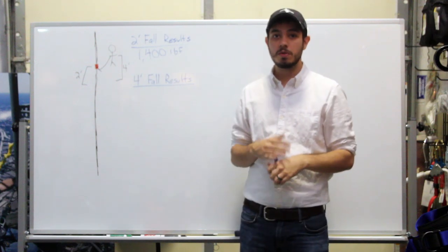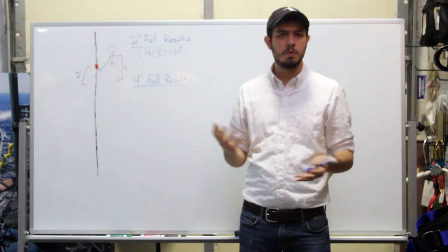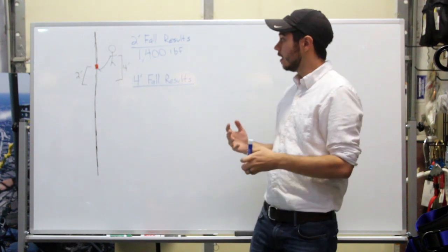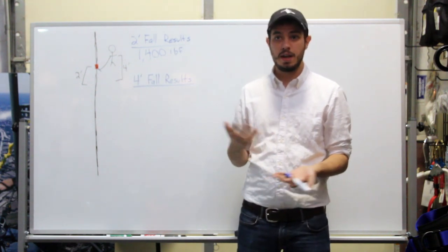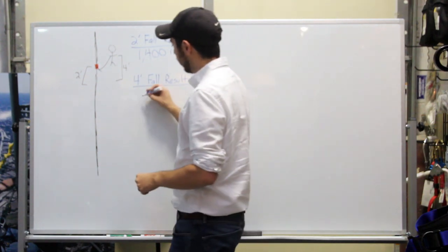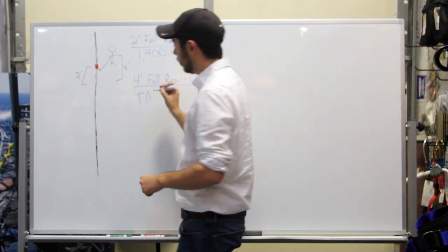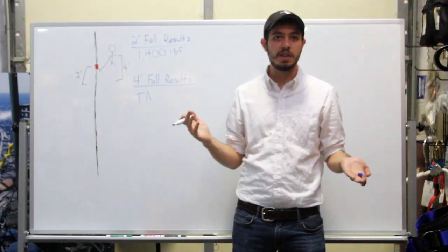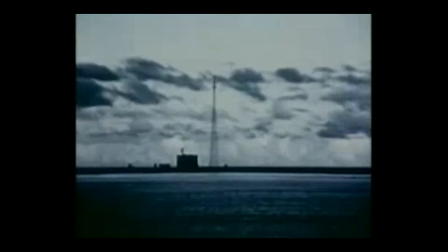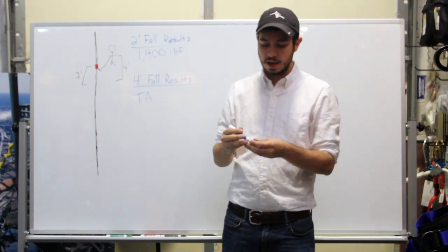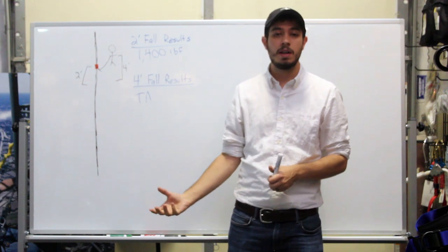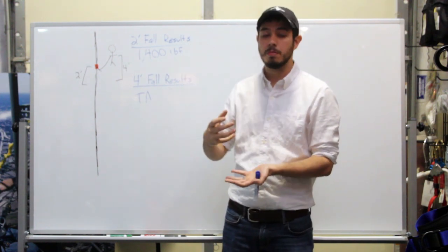Well, those results were more in line with what we were expecting. So we had the four-foot fall on a two-foot dynamic lanyard, and our results, as you saw, were TA, which of course stands for Total Annihilation. So it cut right through the sheath of the rope, ripped it off, and it ended up stopping only because we had a stopper knot at the bottom and the rope bunched up.